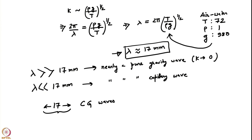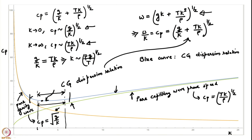Again, these estimates are valid only for air and water. If we change the fluid, the surface tension value changes and so do these estimates. In the region when neither the green curve nor the orange curve are good approximations to the blue curve, we must include both capillary and gravity effects, and the resultant waves behave as capillary gravity waves.